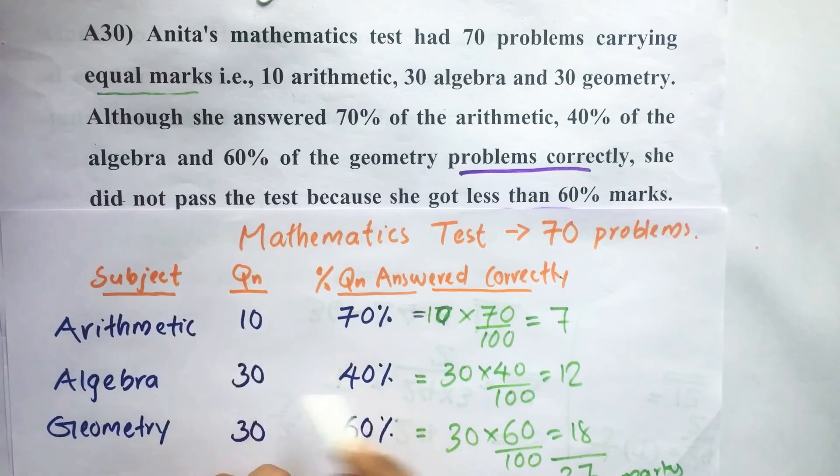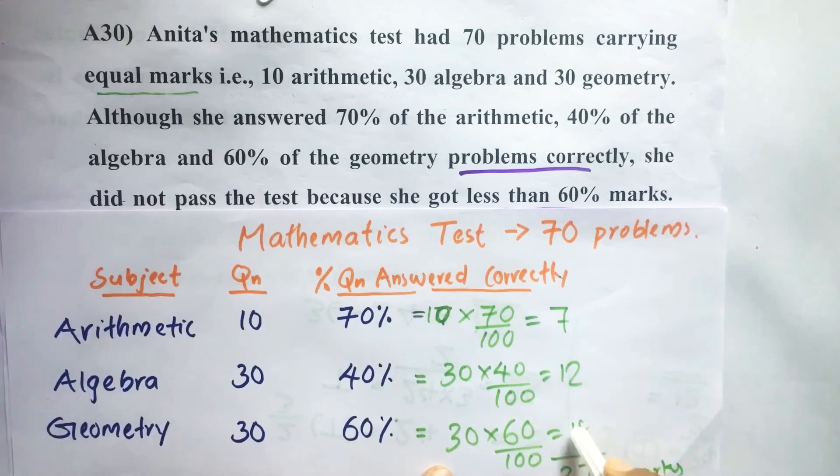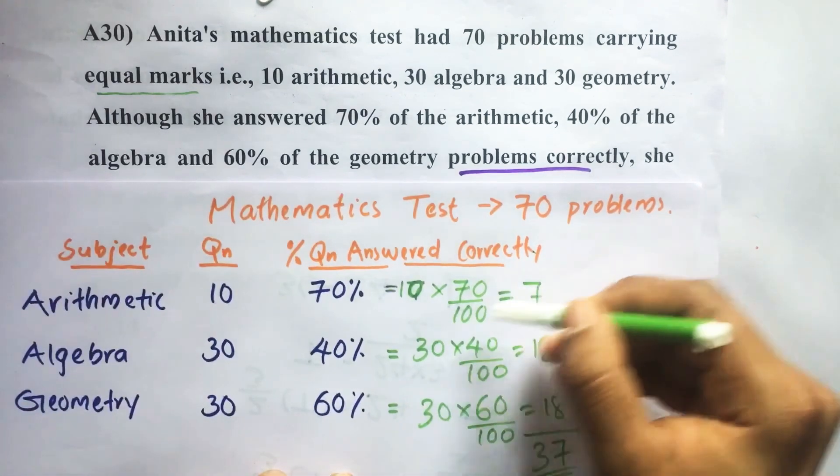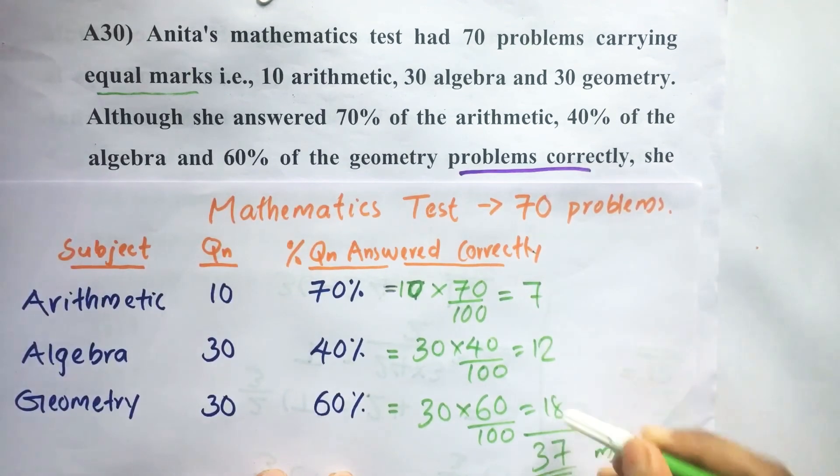the 30 algebra questions gives us 12, and 60% of the 30 geometry questions equals 30 × 60 ÷ 100 = 18. So she solved 7 + 12 + 18 = 37 total questions.